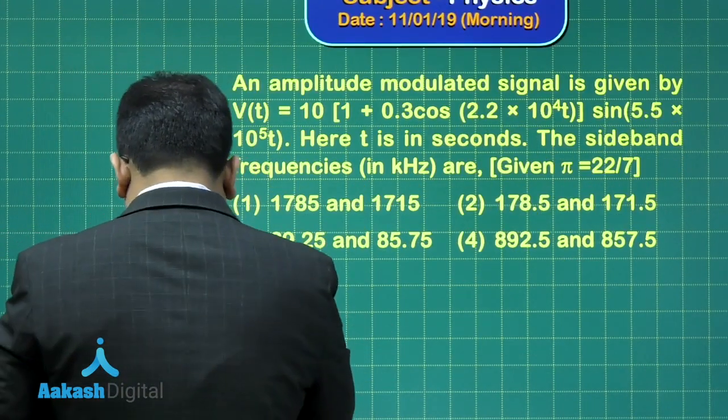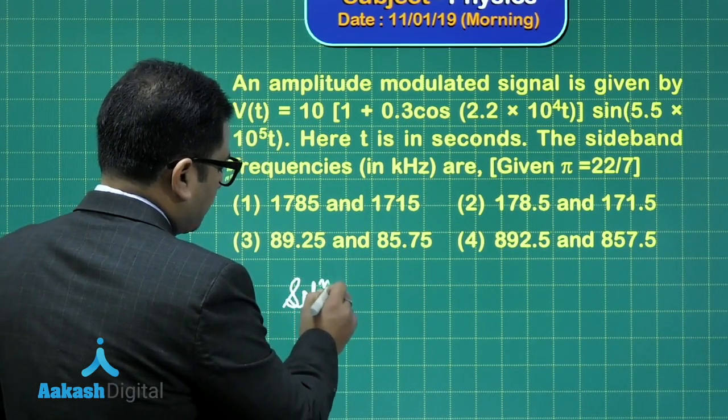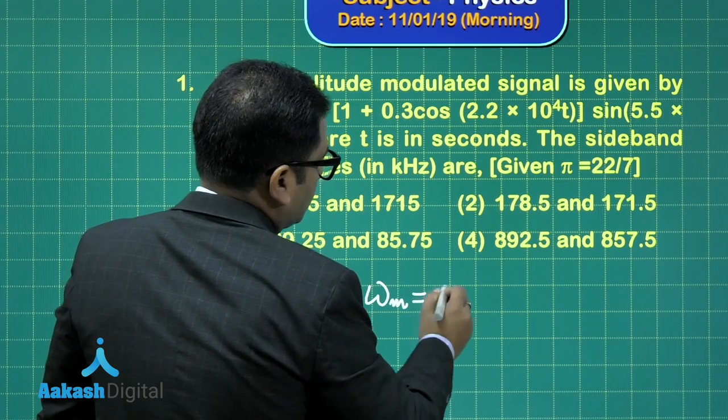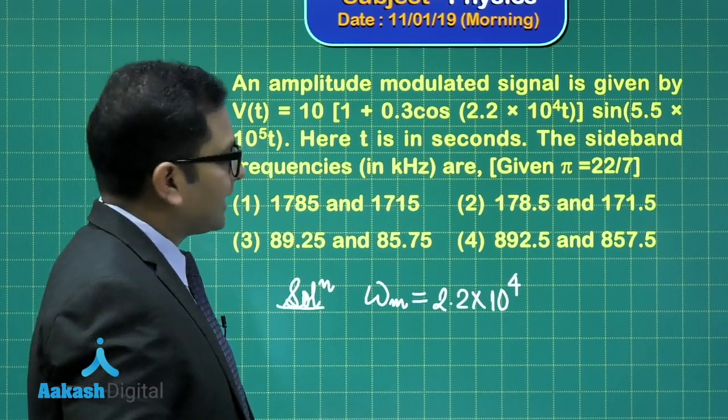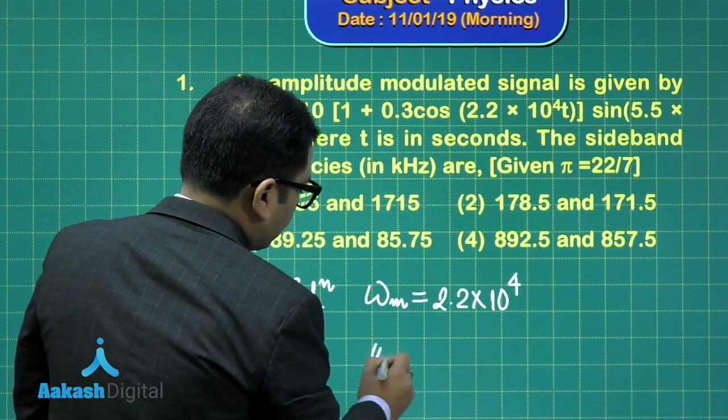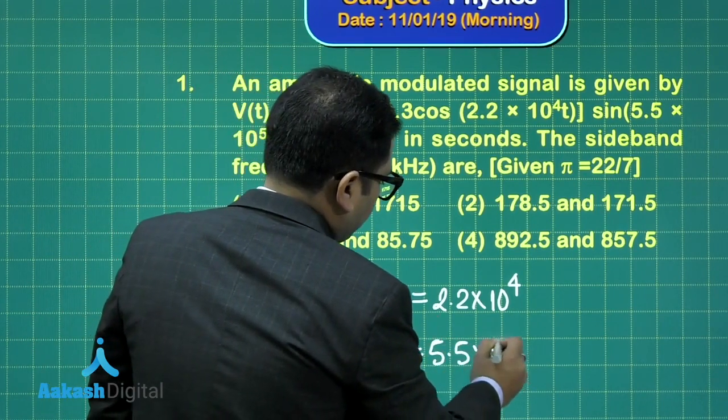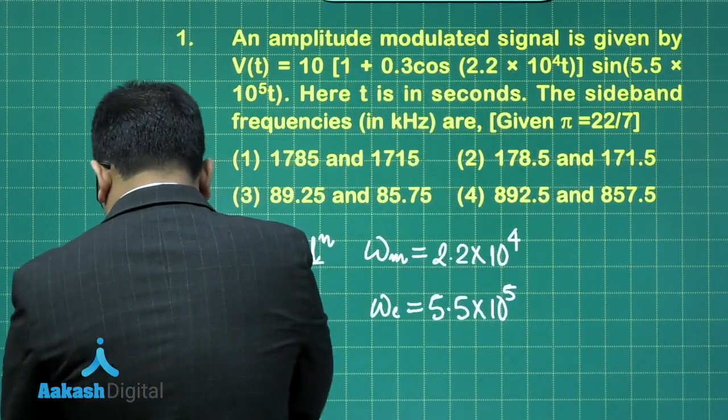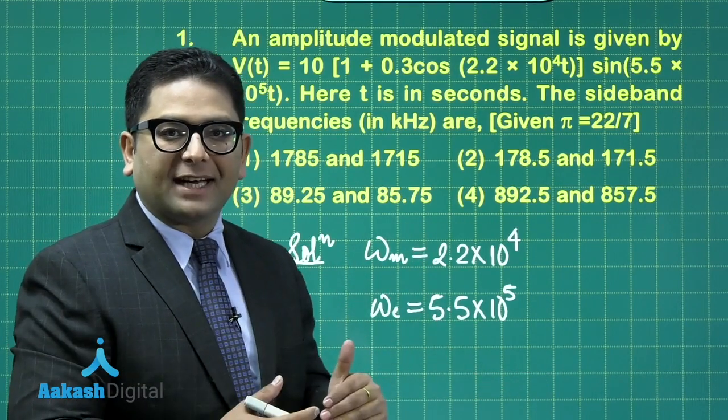Alright, let's see. This goes in a very straightforward manner. If I see the situation here, this one is the modulating omega and that is equal to 2.2 into 10 raised to the power 4. The unit is going to be radiant per second. That's a very straightforward pattern. And then this is the carrier one. So I get omega upper sideband frequency is going to be omega c plus omega m.